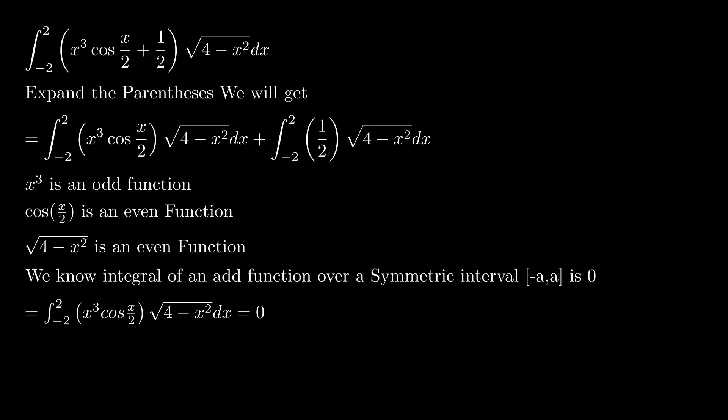You know that an odd function over a symmetric interval -a to a is zero. So the integral on the left-hand side will become zero. Now what we are left with is zero plus the second integral.